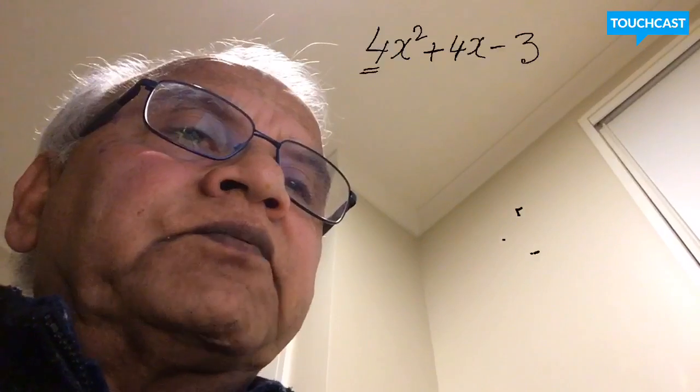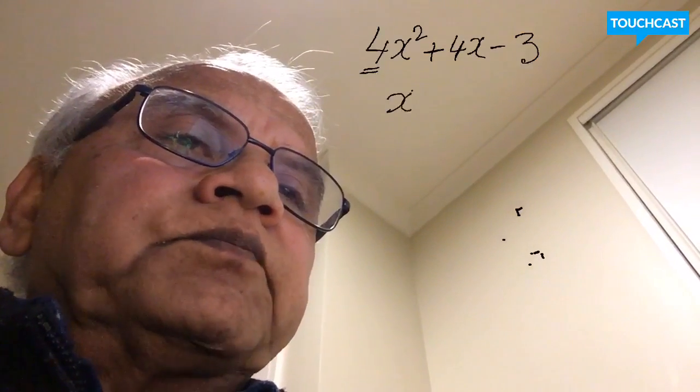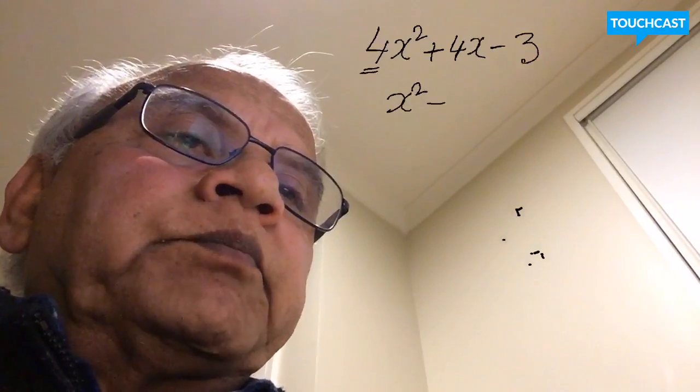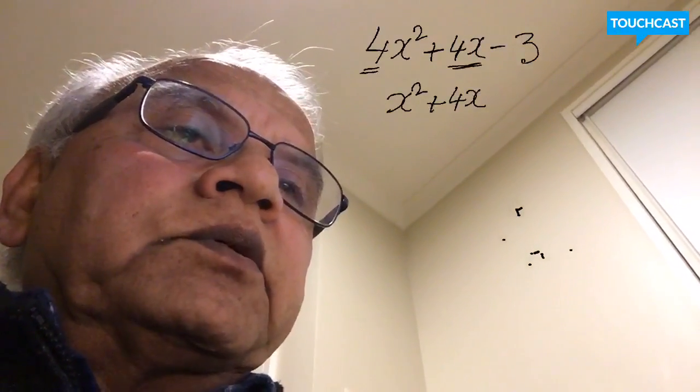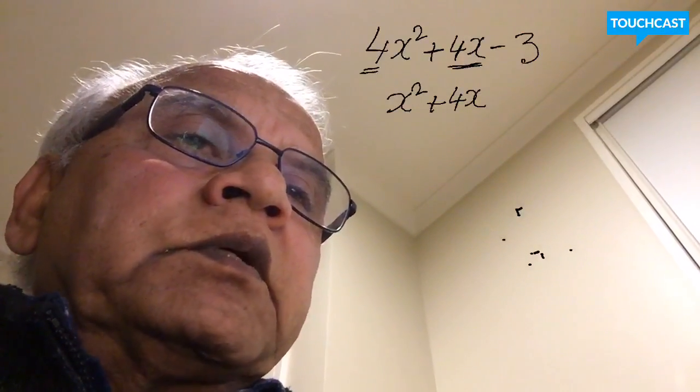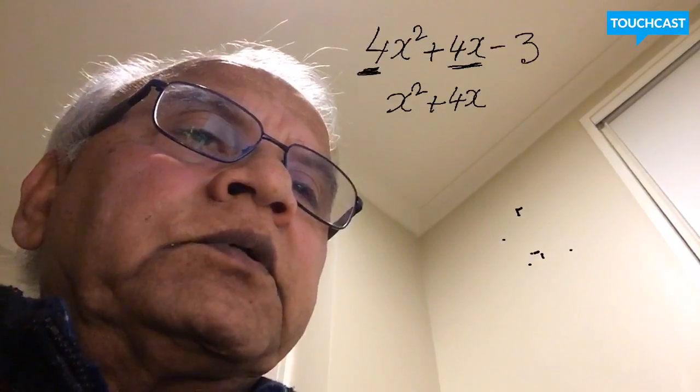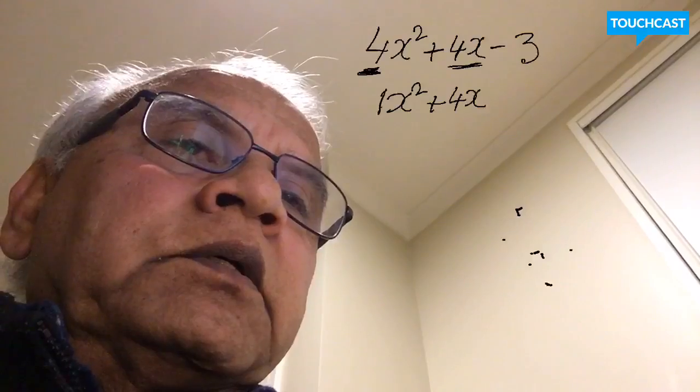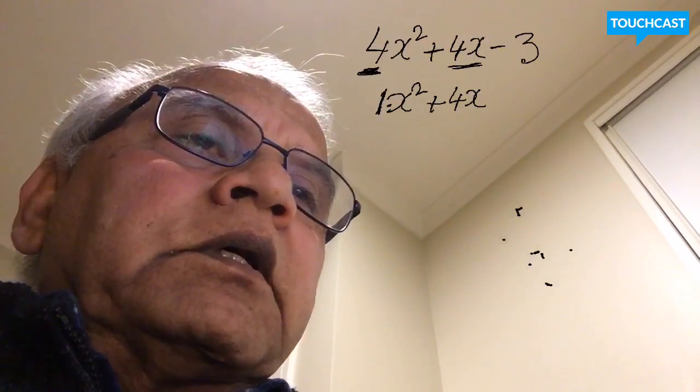We can rewrite the quadratic for now as x² + 4x. I don't change anything to the middle term—I simply replace that 4 by multiplying it by 1.